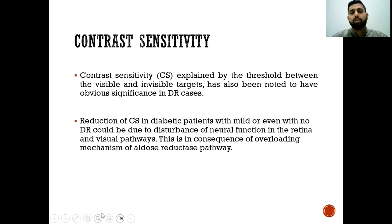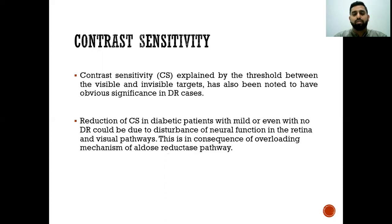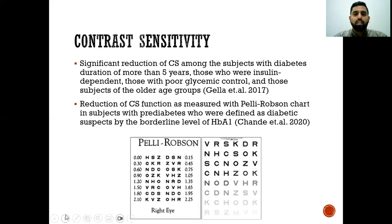Apart from color vision, contrast sensitivity is also affected in diabetes. Contrast sensitivity represents the threshold between the visible and invisible, and has noted obvious significance in diabetic retinopathy cases. Reduction of contrast sensitivity in diabetic patients with mild or even no diabetic retinopathy could be due to disturbance of neural functions in the retina and visual pathways. Significant reduction was found among subjects with diabetes duration of more than five years, those who are insulin dependent, those with poor glycemic control, and older age groups.